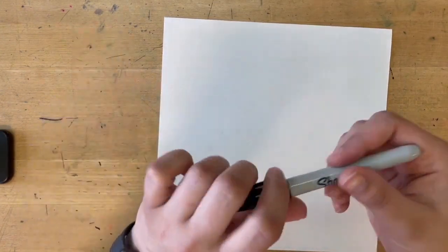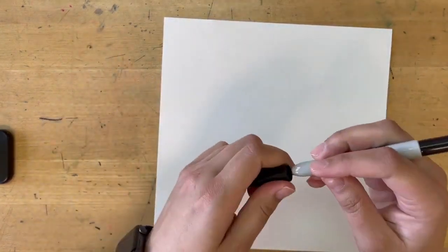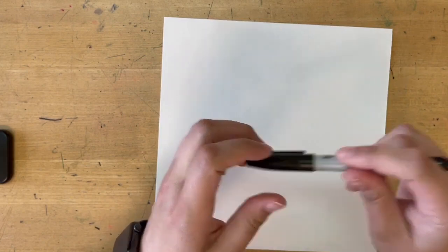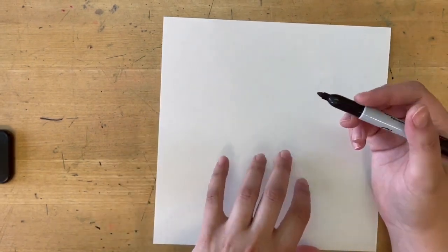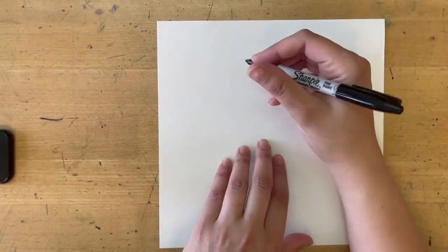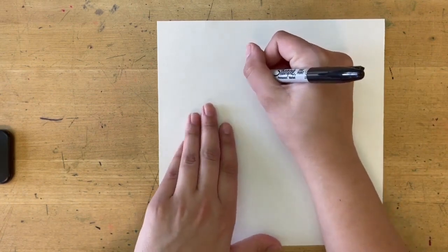Next, what we're going to do is we're going to do our alphabet with Sharpie. When we do this, we want to work very slowly, trying to do our very best letters. So we're going to start with A, and I'm going to do capital letters.